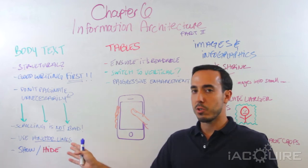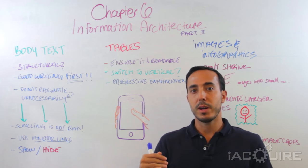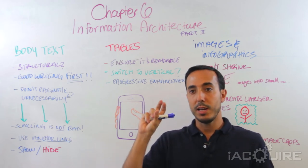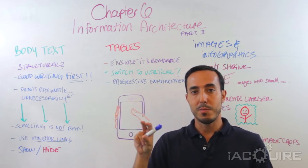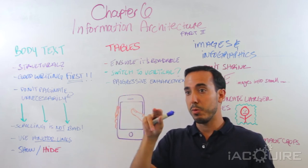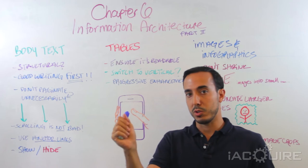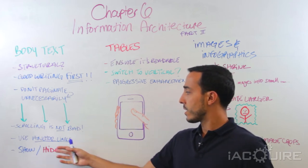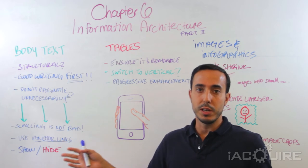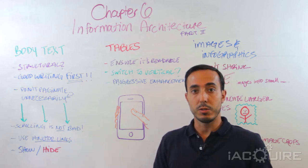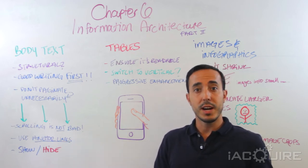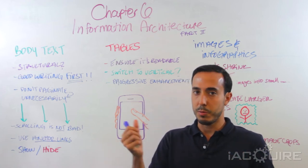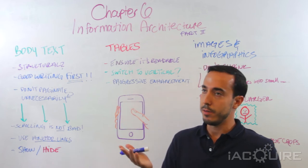Scrolling might get a little tedious if someone is looking for one specific piece of the article, so what you could think about doing is using traditional anchor links to link directly into certain sections of the page. You could put those anchor links as a kind of table of contents right at the top of your article so people can see there are four different sections and jump straight to section four. And again, using expandable divs to show and hide content is another great way to present content that might be a little too long — just let people click the button to expand or hide it.